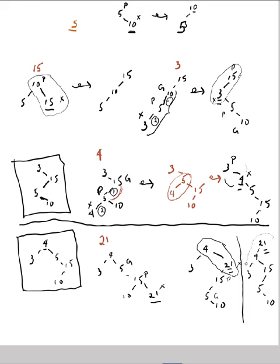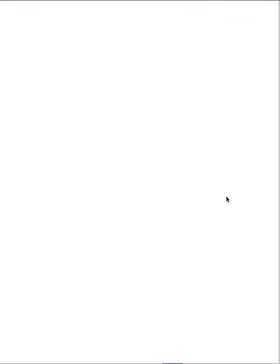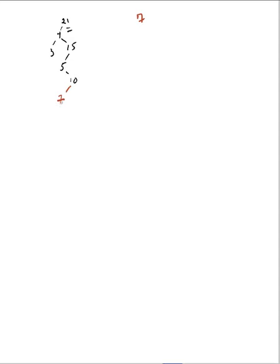Now I want to insert the 7. 7 is less than 21, greater than 4, less than 15, less than 10. So here's my 7. This is my X, P, and G. I see I have a zig-zag configuration here, so I first rotate around this link and then around that.